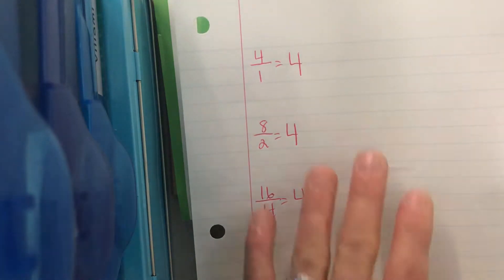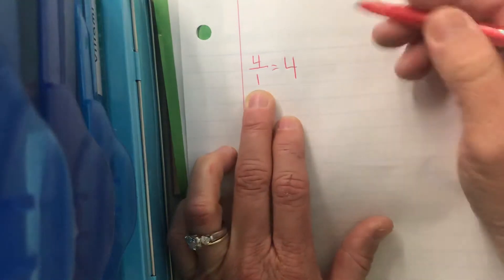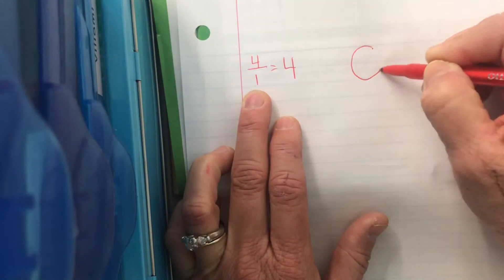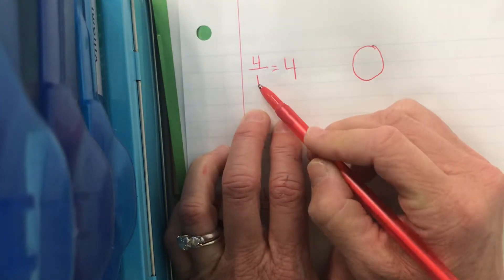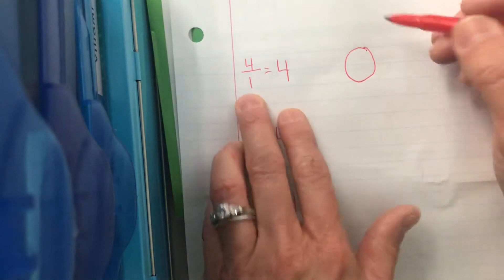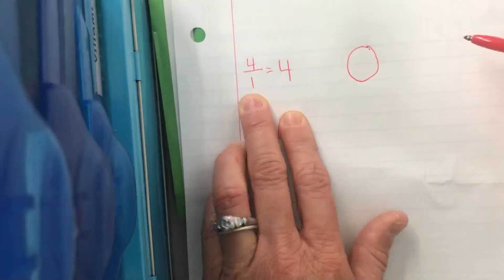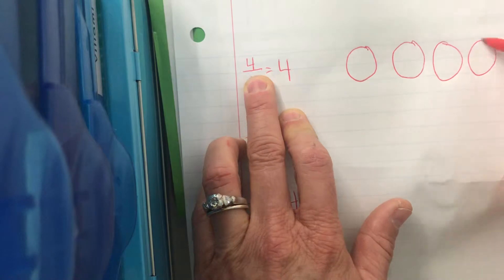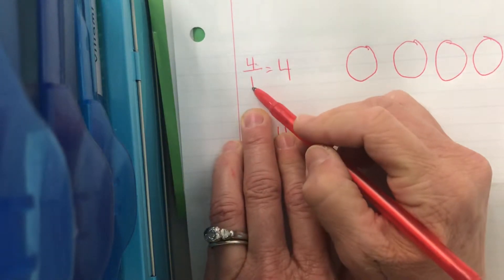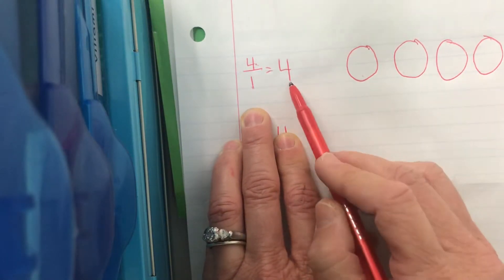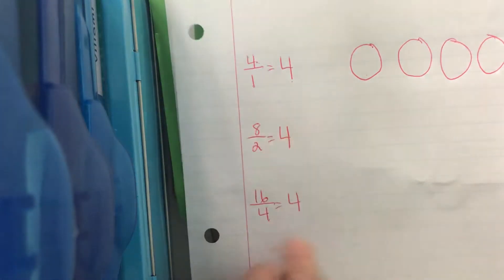Let's look at a picture of those. Our denominator is 1, which means this pizza is divided into how many parts? 1. Do I need to do anything? No. And how many of these do I have? 4. I have 4 wholes, but I did not divide, 4 pieces of 1 whole. So, 1, 2, 3, 4. How many pizzas do I have? 4.